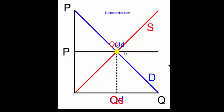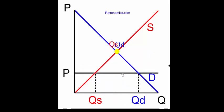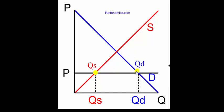If the price goes down in the marketplace, then the quantity supplied will go down and the quantity demanded at that lower price will go up, and this will cause a shortage in the marketplace — the quantity demanded is greater than the quantity supplied.